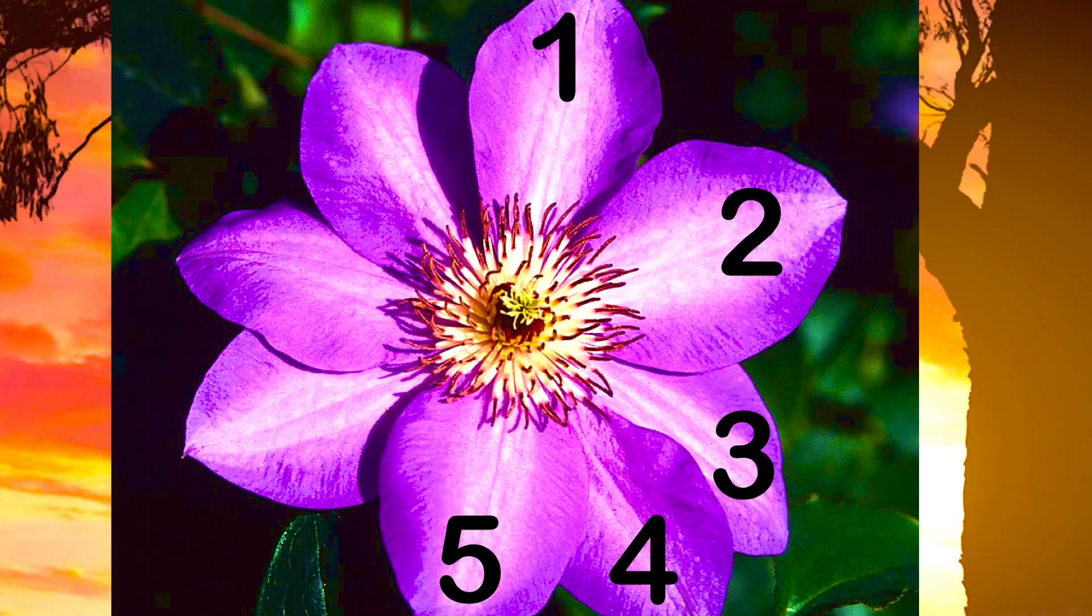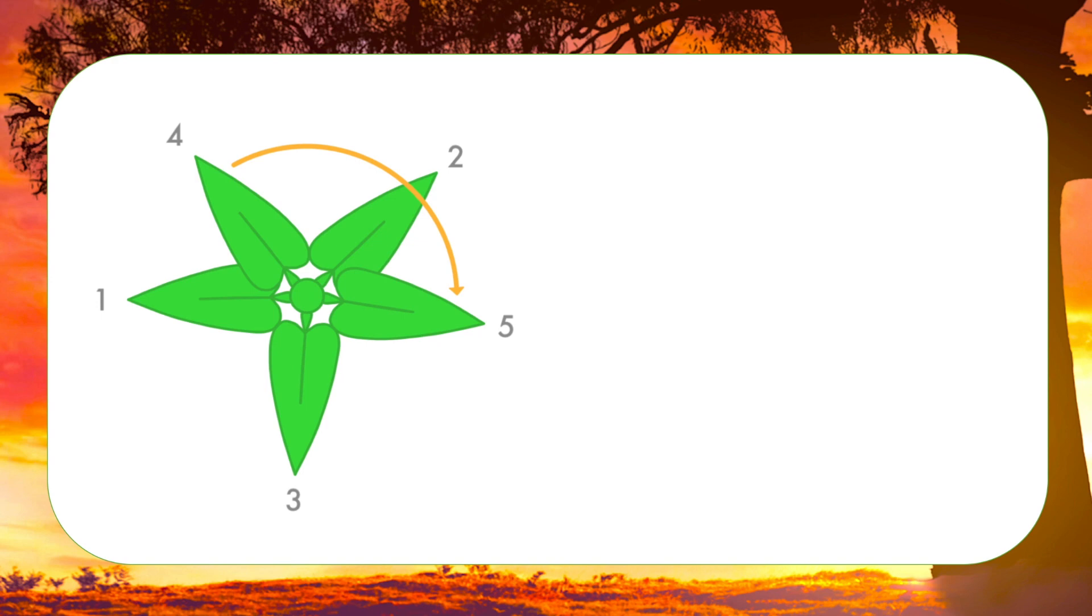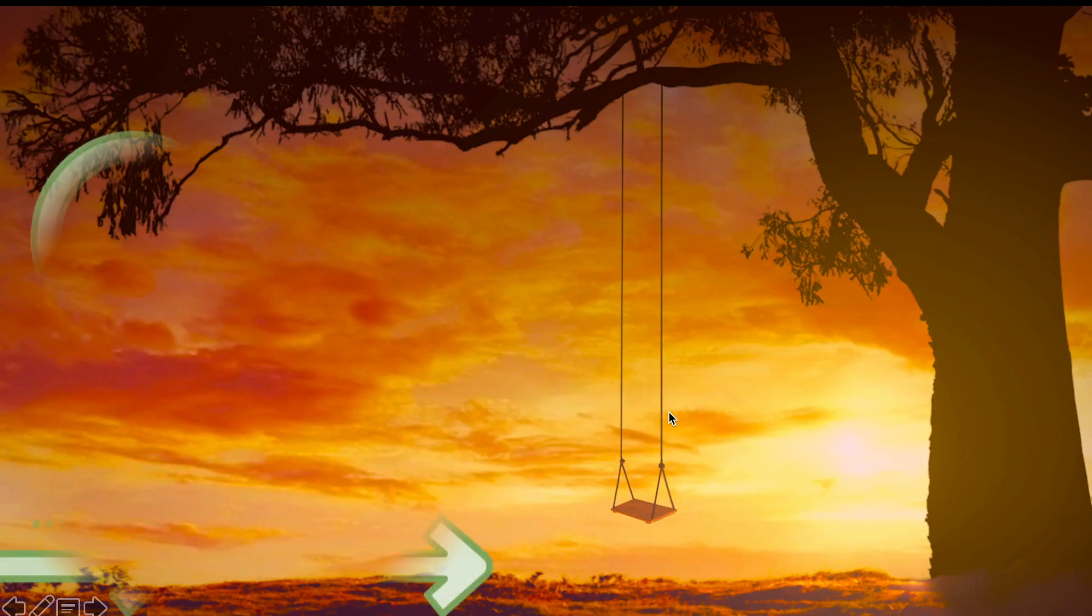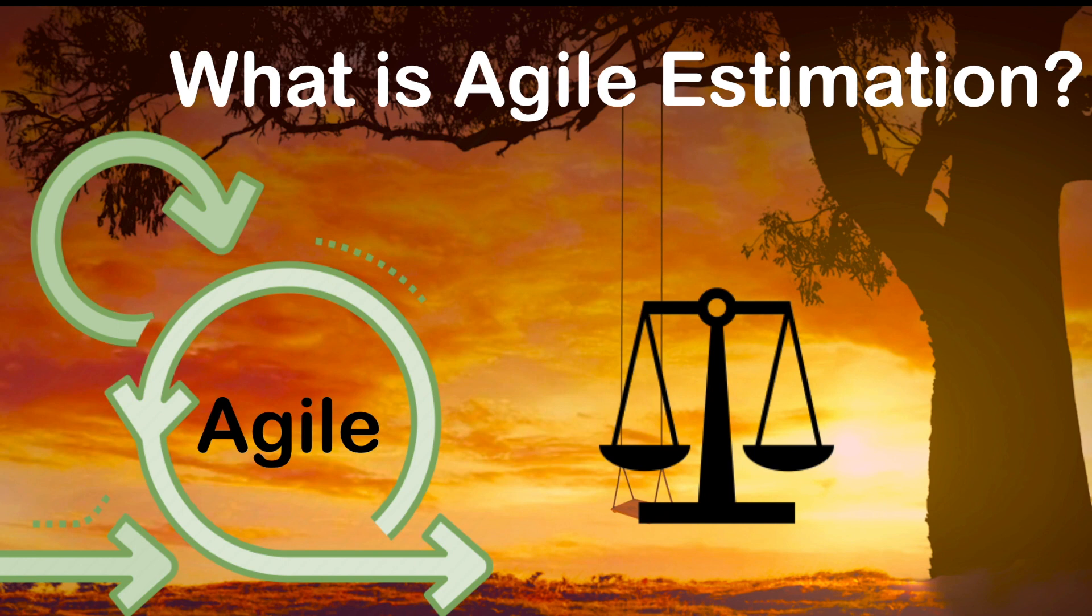You may wonder why we are using the Fibonacci number in Agile Story estimation. Let's try to understand what an Agile Story estimation means first. An Agile Story estimation refers to a way of quantifying the effort needed to complete a development and testing task.